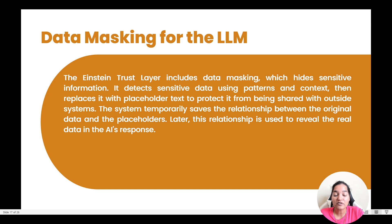The system temporarily saves the relationship between the original data and the placeholder. Whichever text it is replacing with the placeholder, it saves that information so it can be used during the data unmasking process. For example, if a customer's phone number was the sensitive information, it replaces that phone number with placeholder text and stores the mapping. Later, this relationship is used to reveal the real data in the AI response.